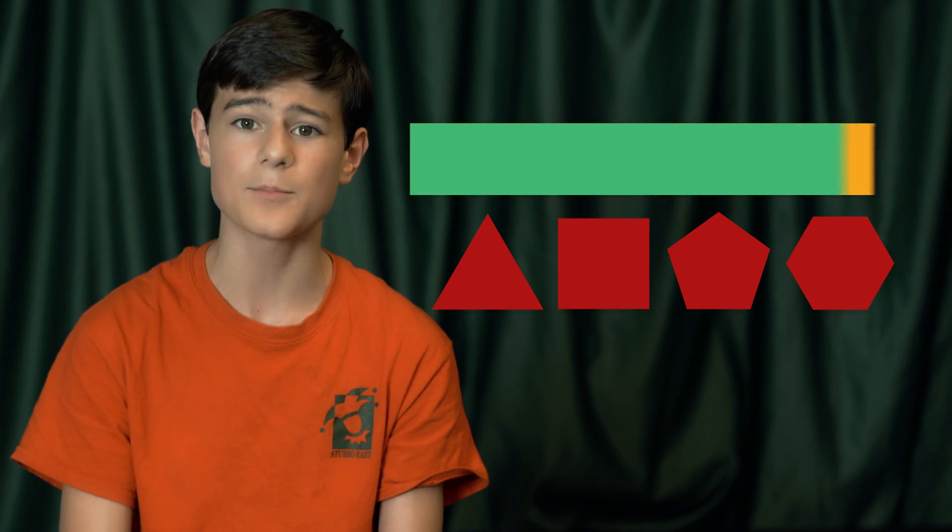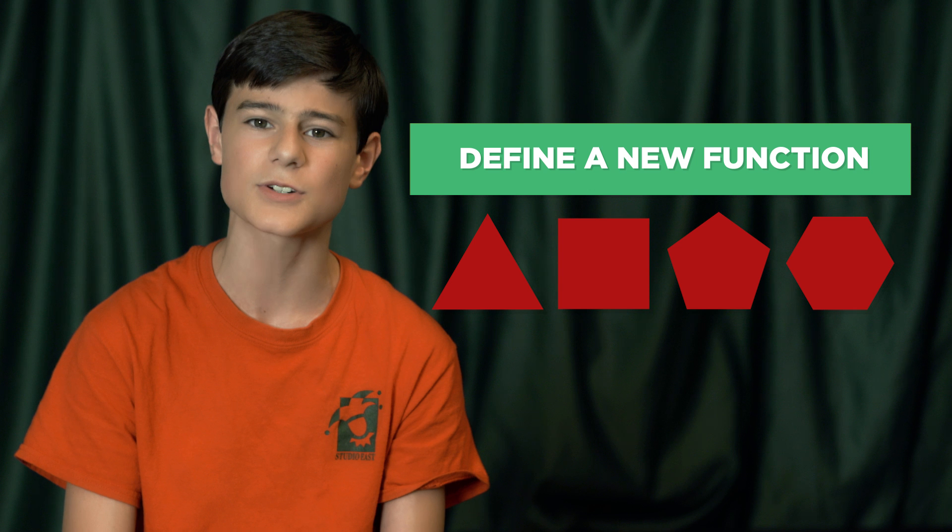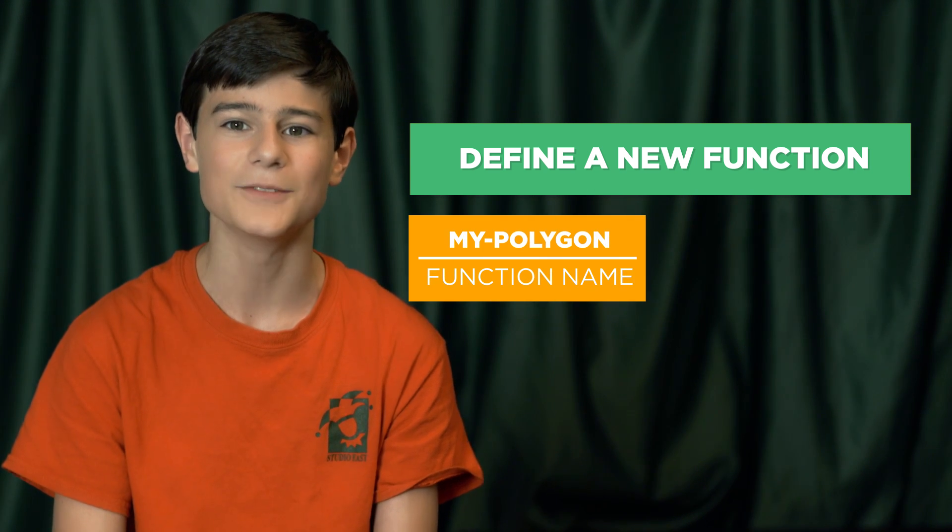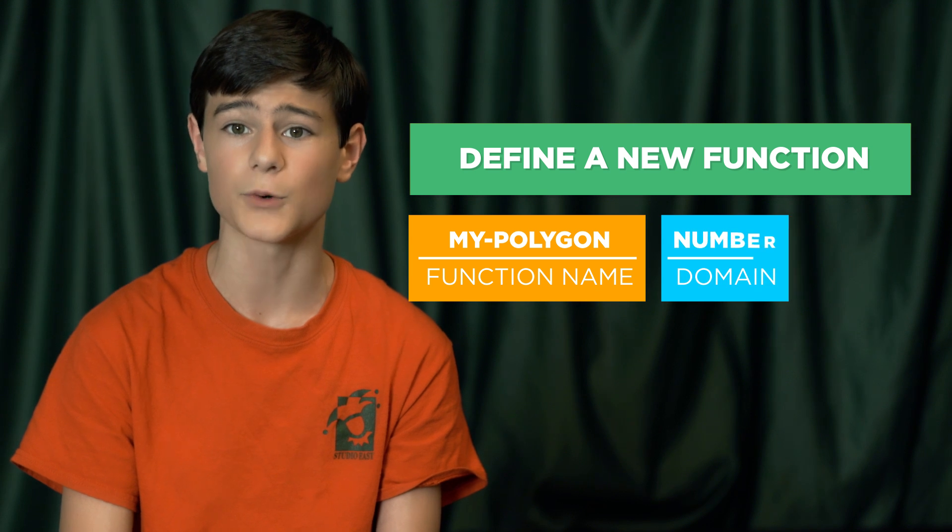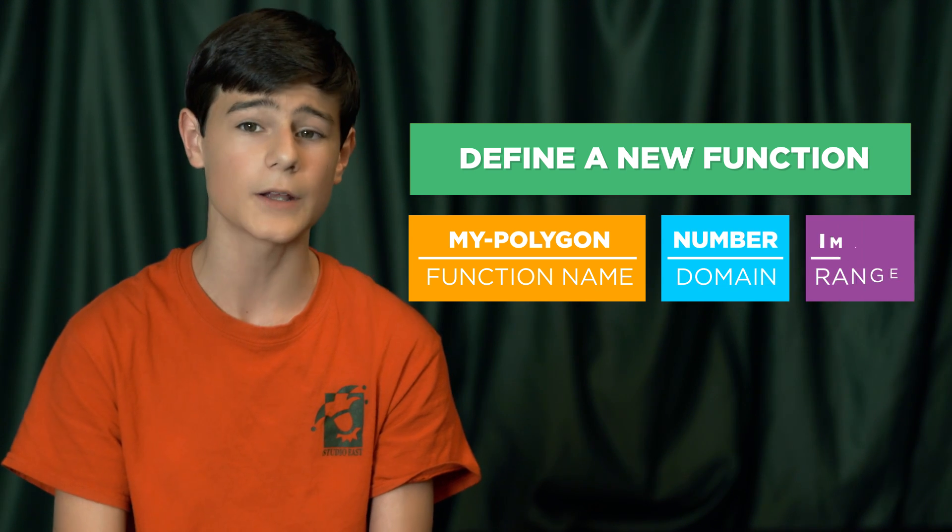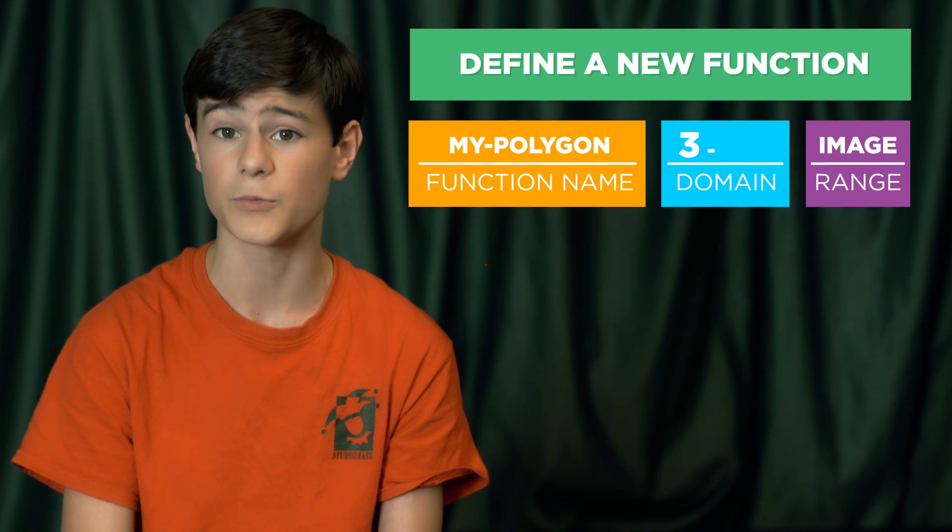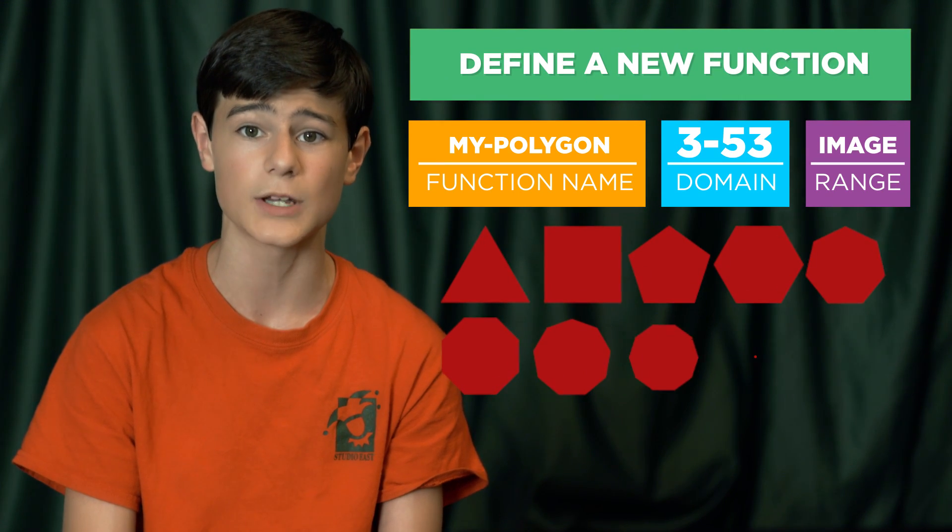We can do just that by defining a new function that doesn't return the same shape every time. Let's call our new function myPolygon. It should take a single number for sides and return a red polygon of given sides. We can call this function with every number from 3 through 53 to fill up our screen with red polygons.